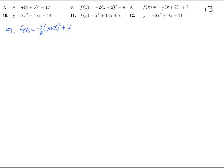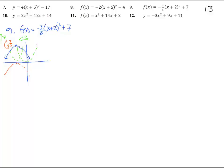This is in vertex form, so we can read the vertex right off. It starts as the normal x squared, gets slid left 2 to negative 2, then flipped over since the coefficient is negative. 3 fifths makes it a bit wider since everything got shorter. Then it goes up 7. So the vertex is at negative 2, 7, and the graph opens downward, a little wider than normal.